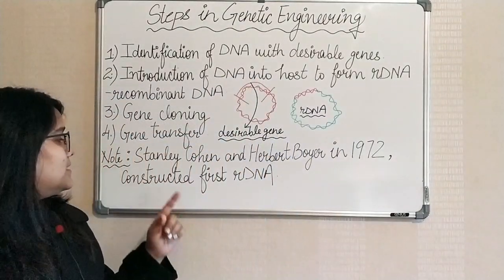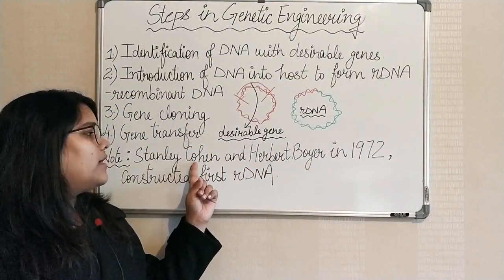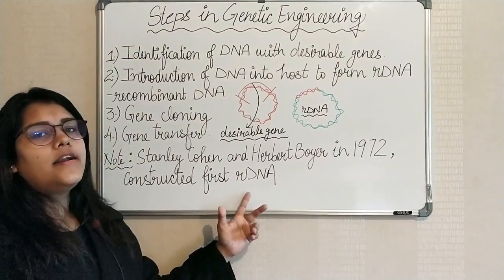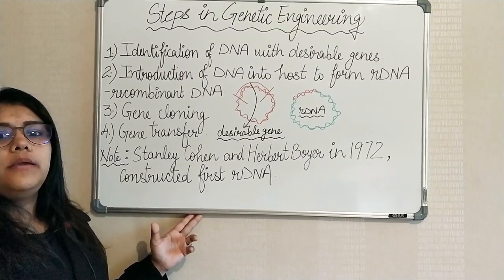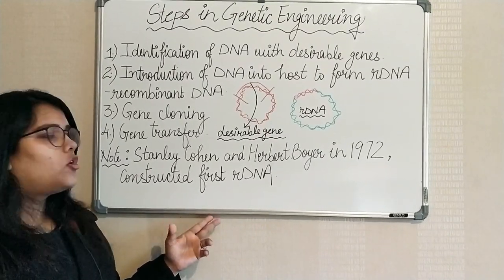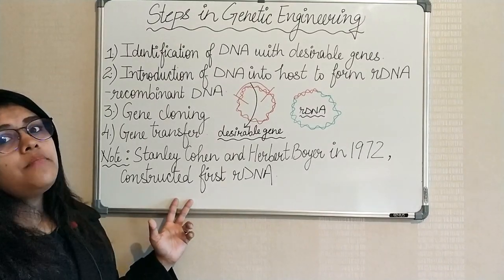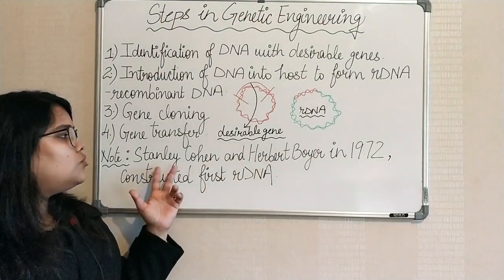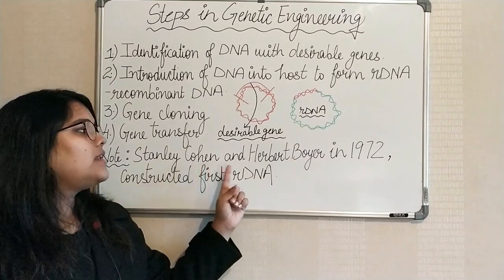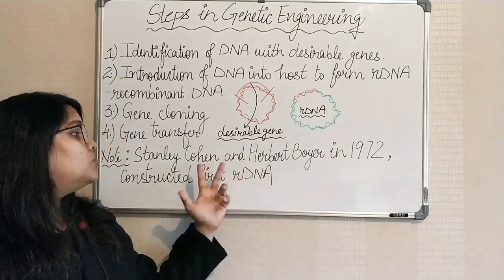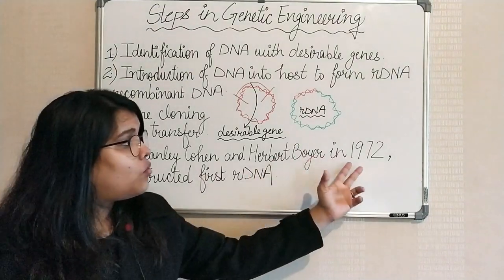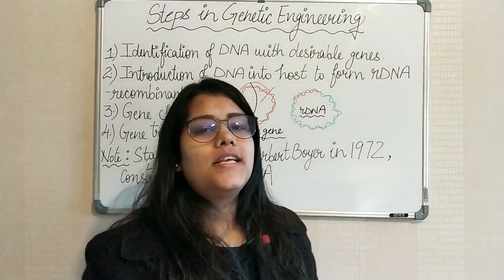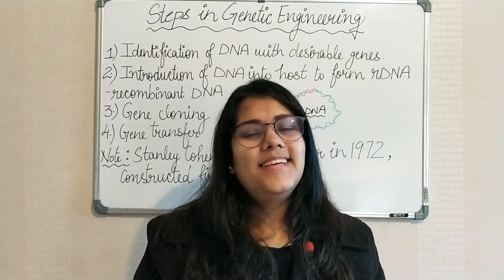Finally, an important note: Stanley Cohen and Herbert Boyer in 1972 constructed the first rDNA. You may not be asked this in regular exams, but in PMT exams you can be asked the names of these scientists or the year. So remember: Stanley Cohen and Herbert Boyer produced the first recombinant DNA in the year 1972. That is all for today's video — thank you so much, and keep learning biology.